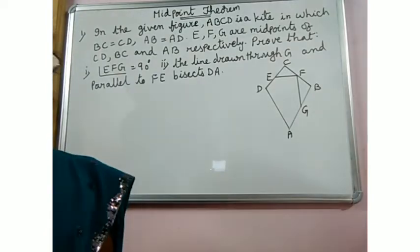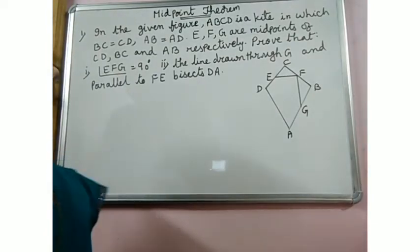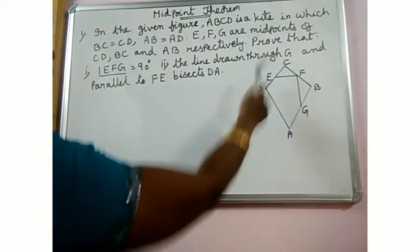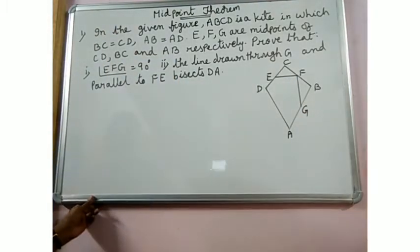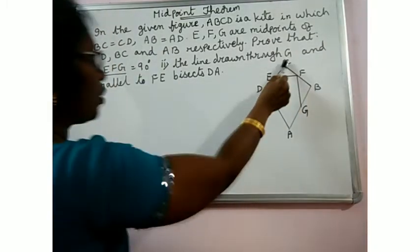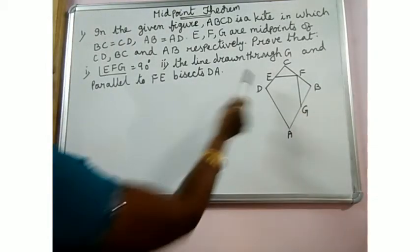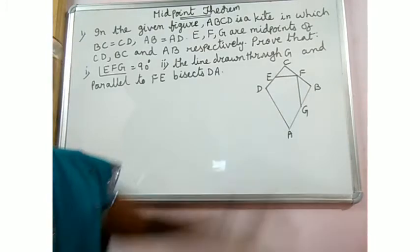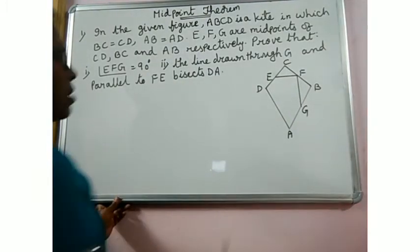Hello, welcome. Today let us have a problem based on the midpoint theorem. Today's problem is: in the given figure, ABCD is a kite in which BC equals CD and AB equals AD. That is, we already know that in a kite two pairs of adjacent sides are equal, and that is what is given to us.